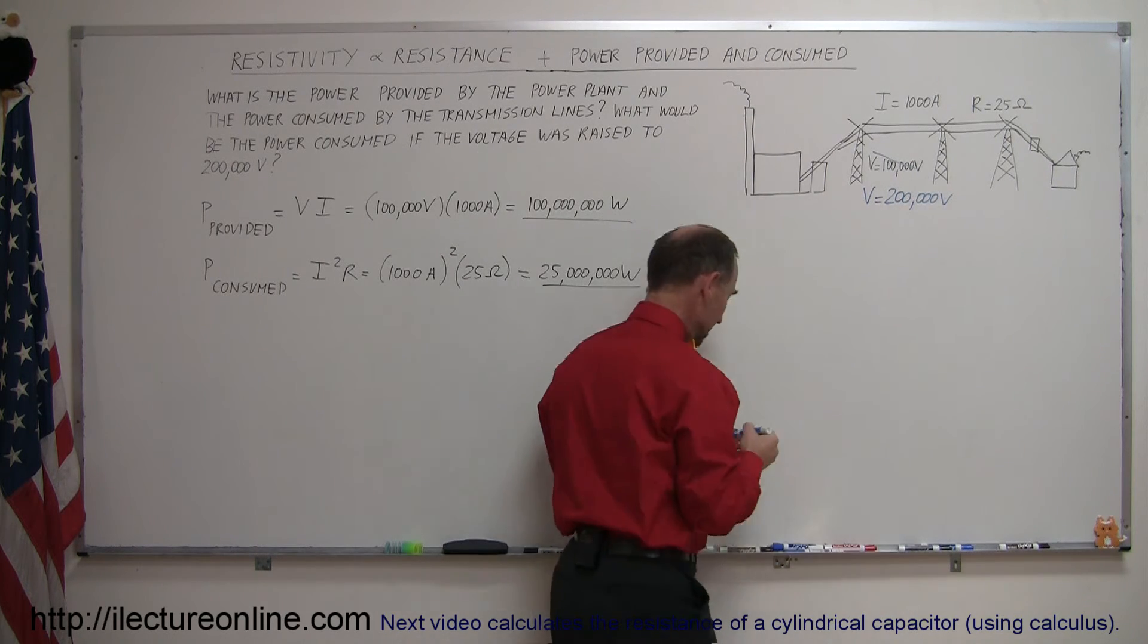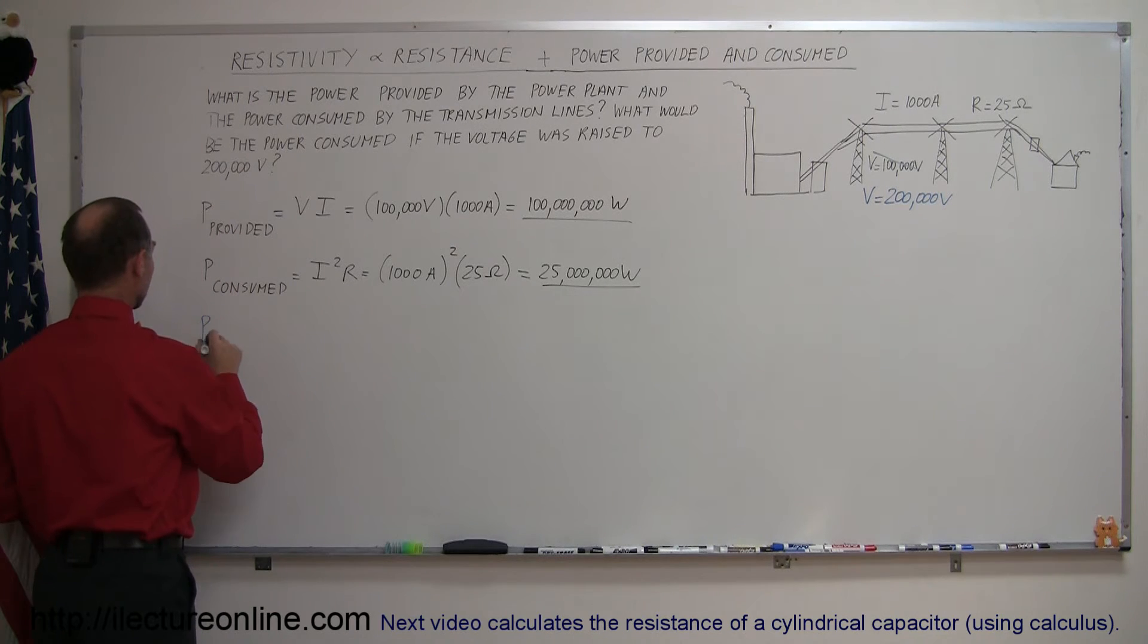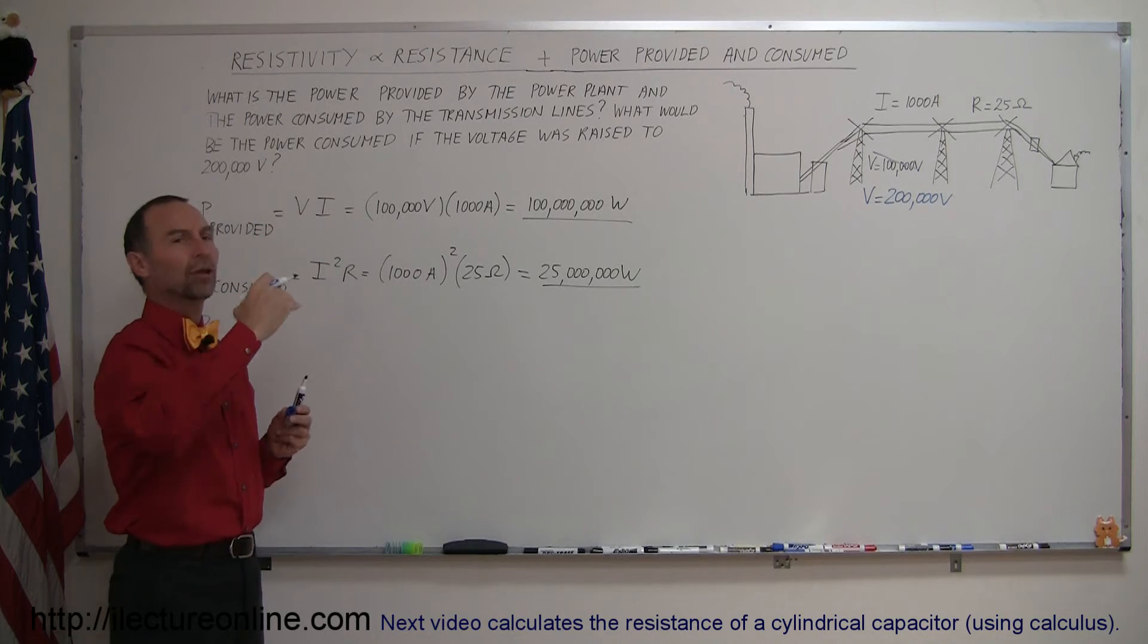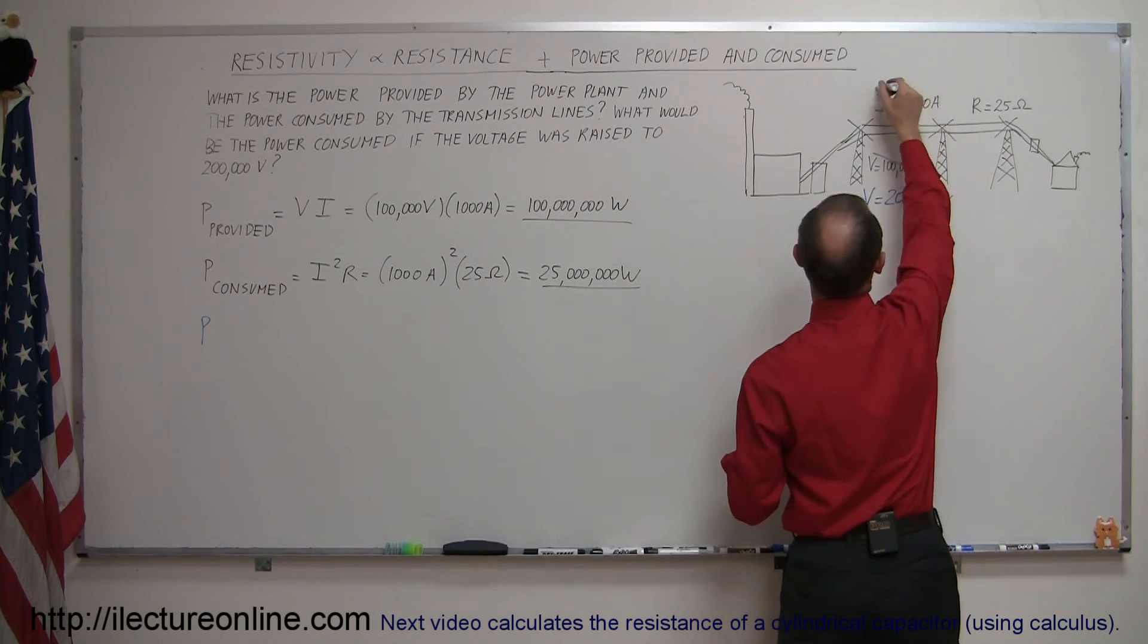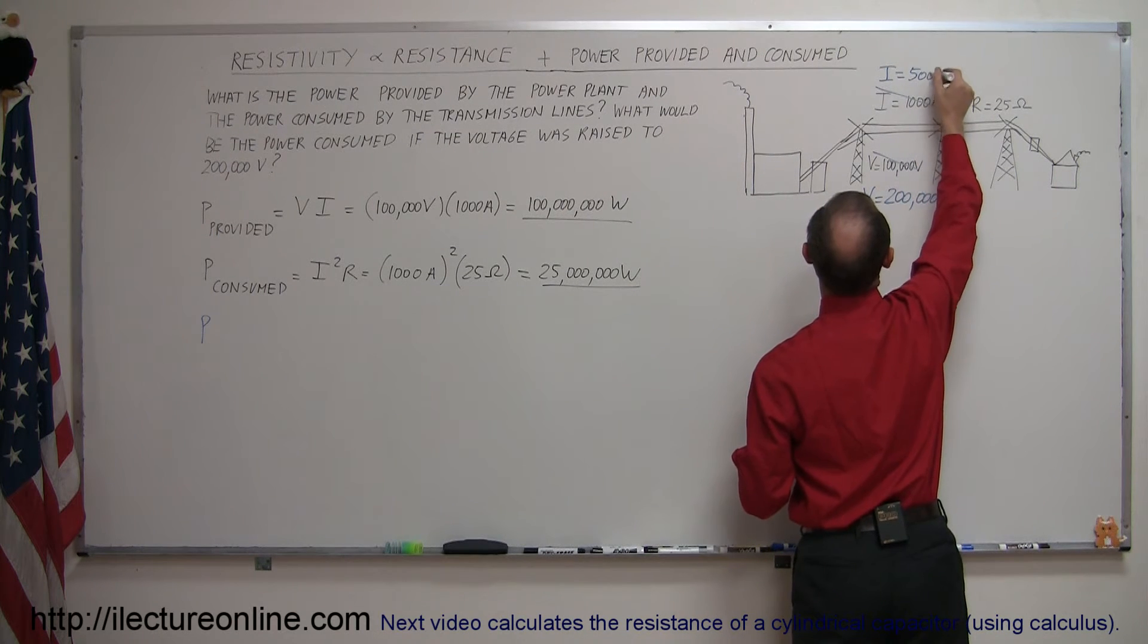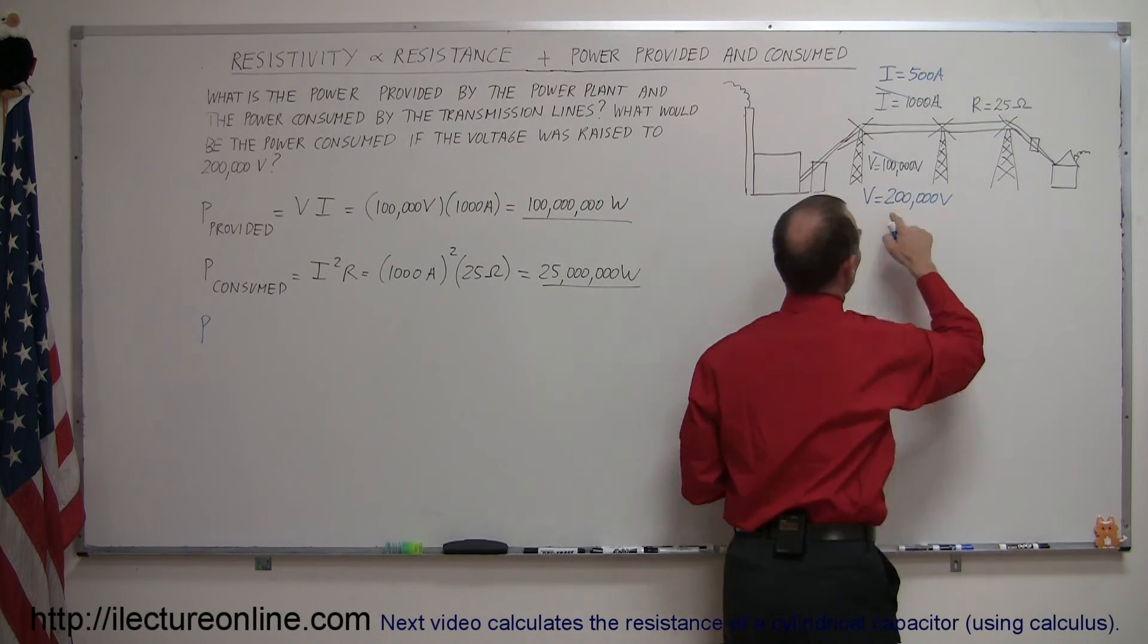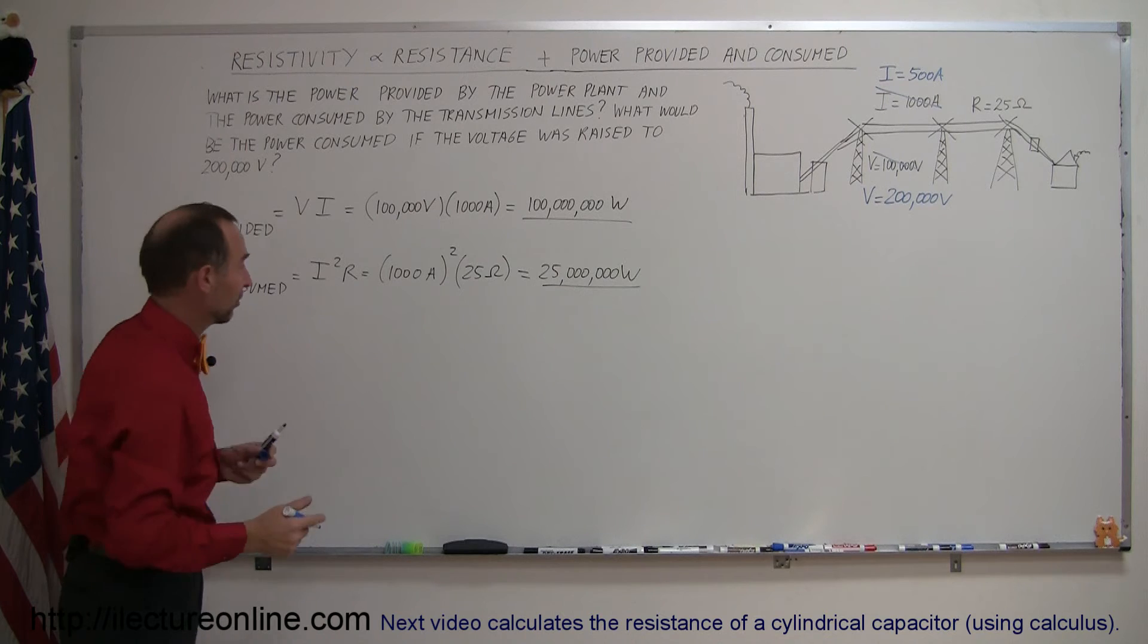What would the answers be now? All right, so again the power provided. Now keeping in mind if you raise the voltage and the factory produces the same amount of power, that has the effect of reducing the current to only half. So that would now only be 500 amps of current necessary to provide the same amount of power because we have doubled the voltage.